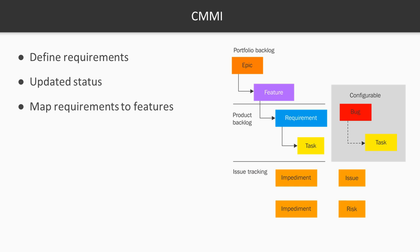Now let's talk about CMMI in TFS — the Capability Maturity Model. It doesn't get discussed much because most folks are working in agile or Scrum, but you can use CMMI in TFS. On the work item flow, we have epics and features just like Scrum and agile, but instead of product backlog items or user stories, we have a requirement. The requirement is associated with a task, so it flows the same way — requirements are tasked out, defects and bugs tracked similarly. On the issue side, there's a lot more issue tracking available in CMMI — more information, more reporting, more of everything we can track and manage.